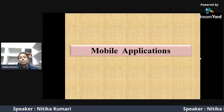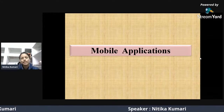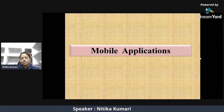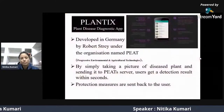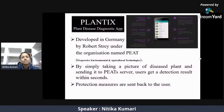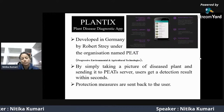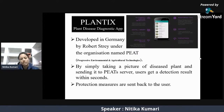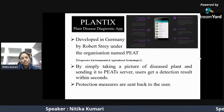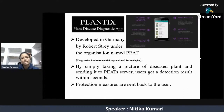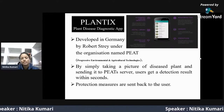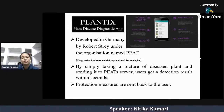The following mobile applications are useful in detecting plant diseases and suggesting various management practices. The Plantix app is a disease diagnostic app developed in Germany by a scientist called Robert Strey under the organization PEAT, which stands for Progressive Environmental and Agricultural Technologies. When a user takes a picture of a diseased plant and sends it to the PEAT server, the disease detection results are returned within seconds, along with protection measures including chemical, biological, physical, and mechanical recommendations.